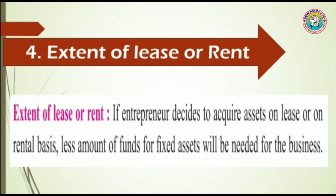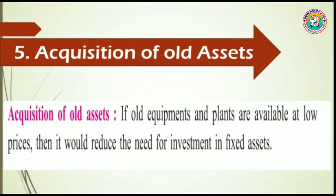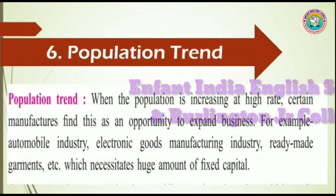Point number five is acquisition of old assets. If old equipment and plants are available at low prices, it would reduce the need for investment in fixed assets. If a businessman's required plant, machinery, or equipment is available second-hand, the price is usually lower. So in that case the businessman will need less fixed capital and can manage the business with less capital.